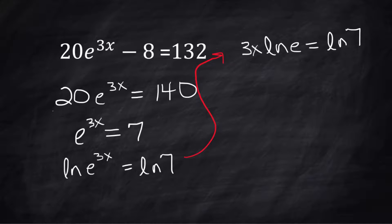That's why you're using natural log, because you're going to get that ln(e), which we know equals 1, and that becomes 3x = ln(7). It simplifies very quickly. Divide both sides by 3. x = ln(7)/3. This is the exact answer. I'm not going to do the decimal approximation.